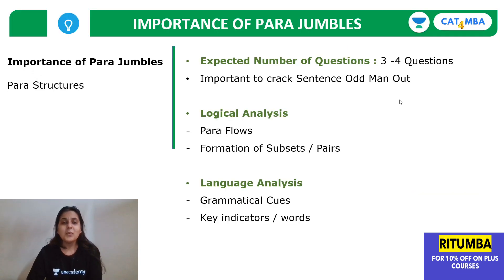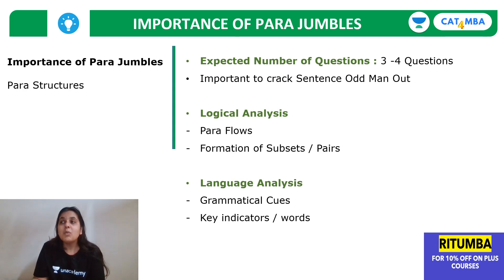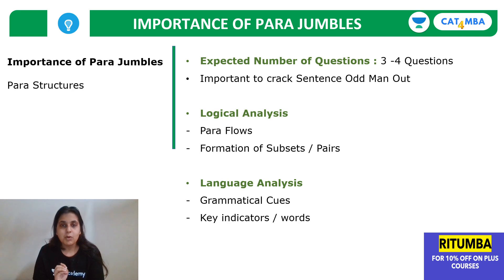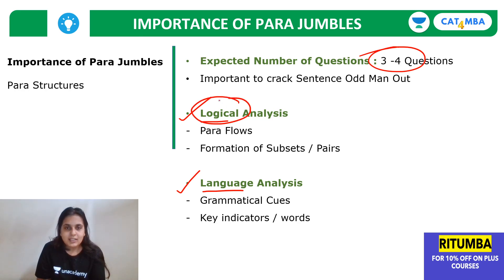When it comes to para jumbles, most doubts come in this area, or in odd one out and RC — these are the three Achilles heels for VARC students. But we have to convert them from an Achilles heel to a trump card. We can expect three to four questions from this area. There are two pillars: logical analysis and language analysis.